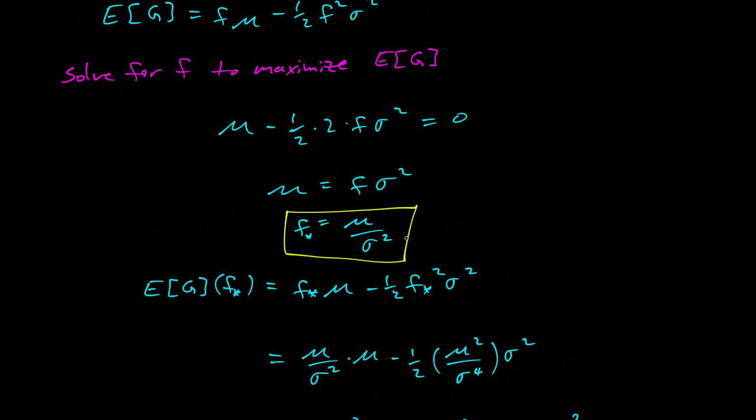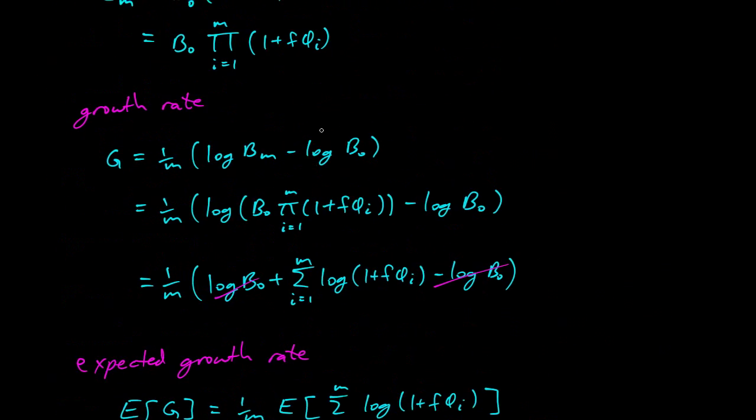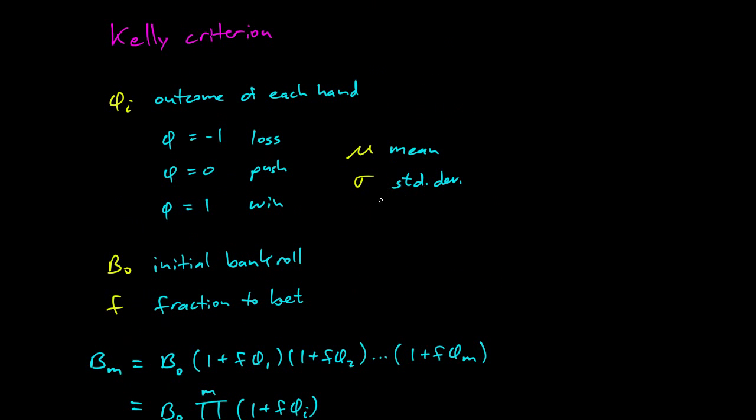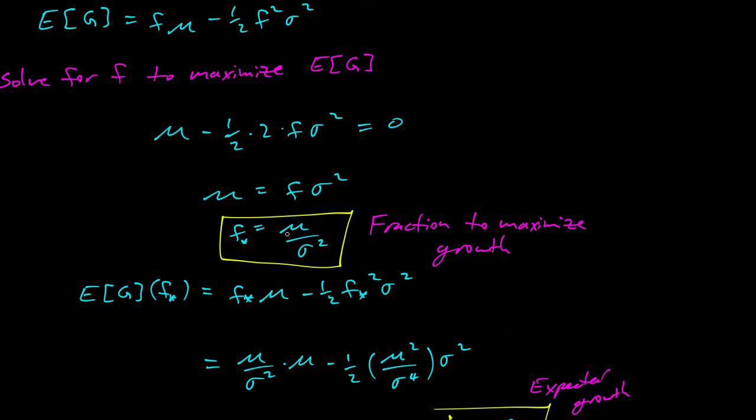We've now found the fraction that maximizes our expected growth and what our expected growth is. So this is the fraction to maximize growth. And here's our expected growth. So pretty cool. So we need to know how our edge works. So what were μ and σ? These are our mean and standard deviation of our outcomes. And so we want μ to be positive, we hope we have a positive edge. And then if we do, we can use this fraction here, μ over σ squared. And that will maximize our expected growth of our bankroll.